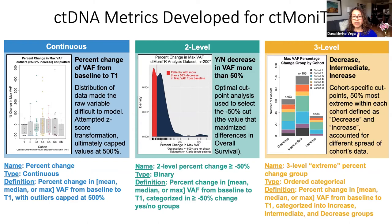The two-level variable was defined after performing an optimal cut point analysis which identified negative 50 percent — a 50 percent decrease in CT-DNA — as an optimal cut point that maximized differences in overall survival. Patients were assigned to two groups: having a large decrease in CT-DNA that exceeded 50 percent, or having an increase or minor decrease in CT-DNA. The three-level variable was created to investigate trends in CT-DNA changes as well as take into account cohort-specific differences in the CT-DNA results. Within each cohort, patients were ordered based on their CT-DNA percent change values. Among patients with decreases in CT-DNA, the 50 percent with the most extreme decreases were assigned to a decrease category. Among patients with an increase or no change, the 50 percent with the most extreme increase were assigned to an increase category, and all remaining patients were assigned to the intermediate category. All three CT-DNA metrics were calculated for mean, median, and max VAF; however, for simplicity we will only show results for max VAF, which had the strongest and most consistent signal across multiple analyses.